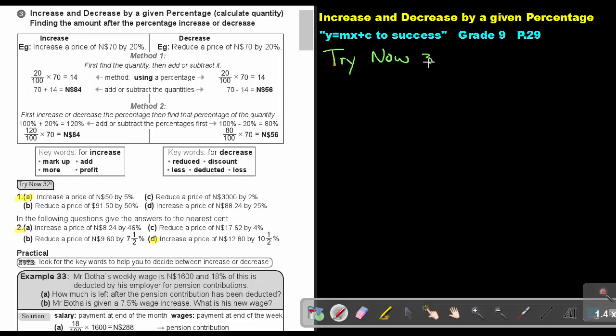We are at Try Now 32 and we're going to start with number A. Now, increase the price of 50 by 5%. So basically, I'm first going to work out, remember this is Method 1, let's just write it there. So I'm first going to work out 5% of 50. Now you can even work it out mentally. 10% will be 5, so 5% is the half of 10% and that will be the half of 5 which will be 2.5. And this is exactly what I will get. And now I will just add it up. So I will say the 50 plus the 2.5 and my answer will be 52.50.